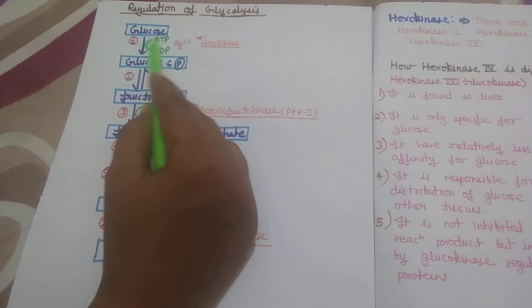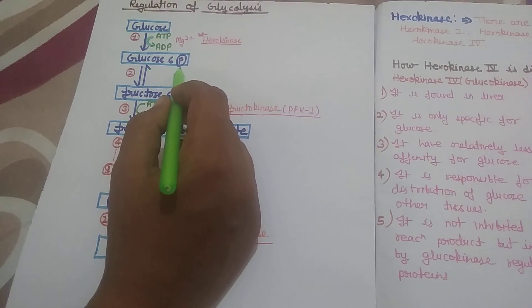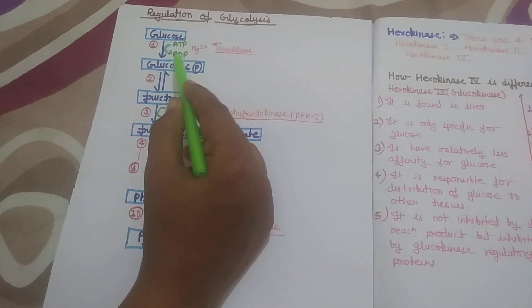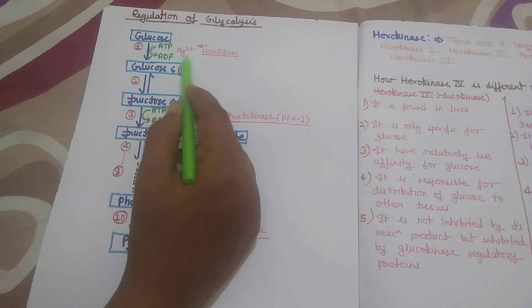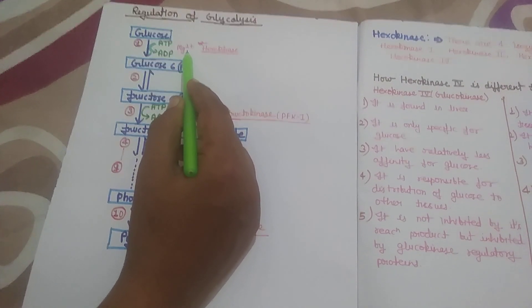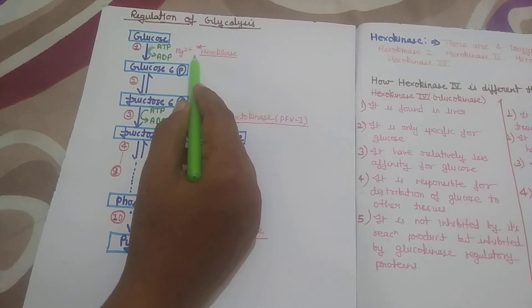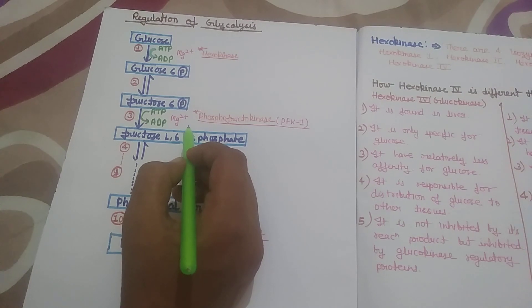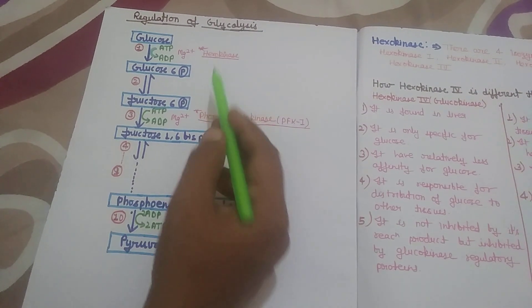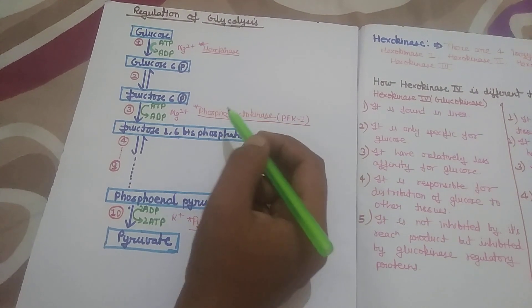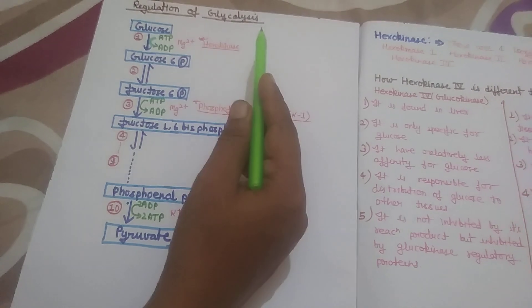In the first regulatory step, glucose is converted into Glucose-6-phosphate by the enzyme Hexokinase. In this reaction, ATP is converted into ADP and magnesium ion acts as a cofactor. All three regulatory reactions are essentially irreversible and play a key role in the regulation of glycolysis.